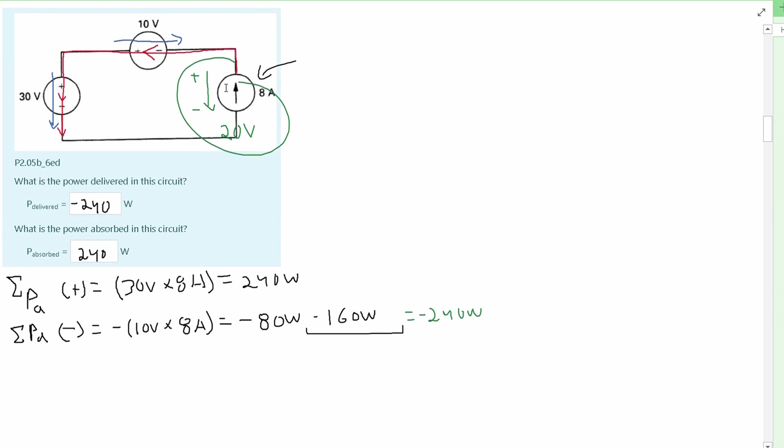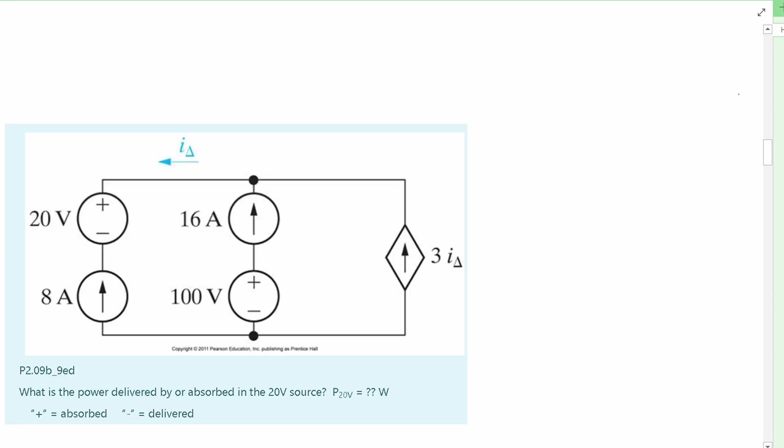We have this problem where we only had one current right here, this 8 amps. If we go back to our current problem, we have this 16 amps, this 8 amps, and this 3 times I delta, which is going to be in amps. So now we have 3 amps here, so this is a little bit different.